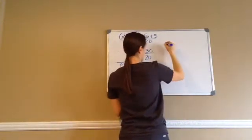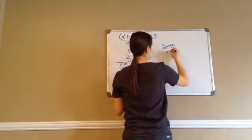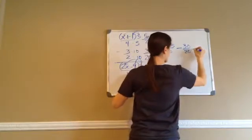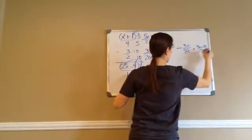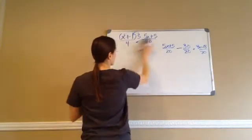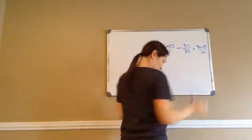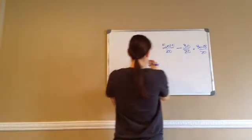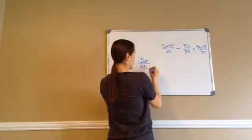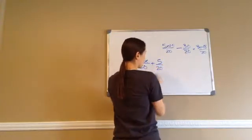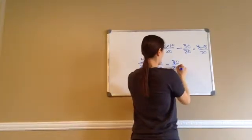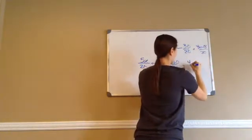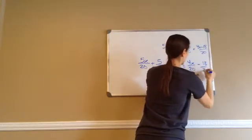Now let's write it horizontally: 5x plus 5 over 20, minus 30 over 20, equals 4x minus 18 over 20. Now, when you have this plus 5 and a 20 as the denominator, I'm going to expand it and put 5x over 20 and 5 over 20, minus 30 over 20, equals 4x over 20 minus 18 over 20.